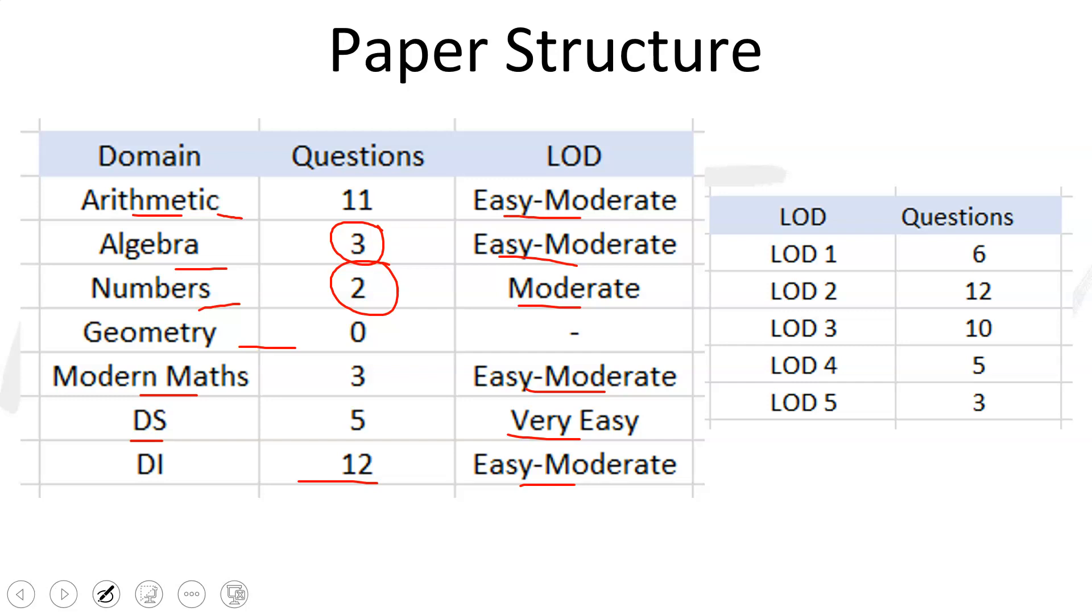Arithmetic was the largest chunk of questions, 11 questions out of 36. So that's almost 30 percent. And all these questions were easy to moderate. Now there is only one single question which I can rate to be difficult from arithmetic. Not that difficult.